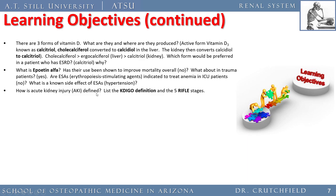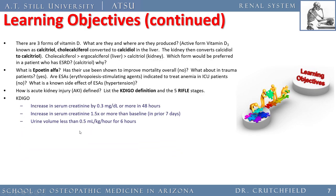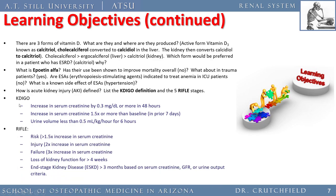How is acute kidney injury defined? Using KDIGO criteria: an increase in serum creatinine by 0.3 or more in 48 hours, or serum creatinine going up by 1.5 times baseline within the prior seven days, or urine volume less than 0.5 cc per kilogram per hour for six hours — all are reasons to worry about acute kidney injury.